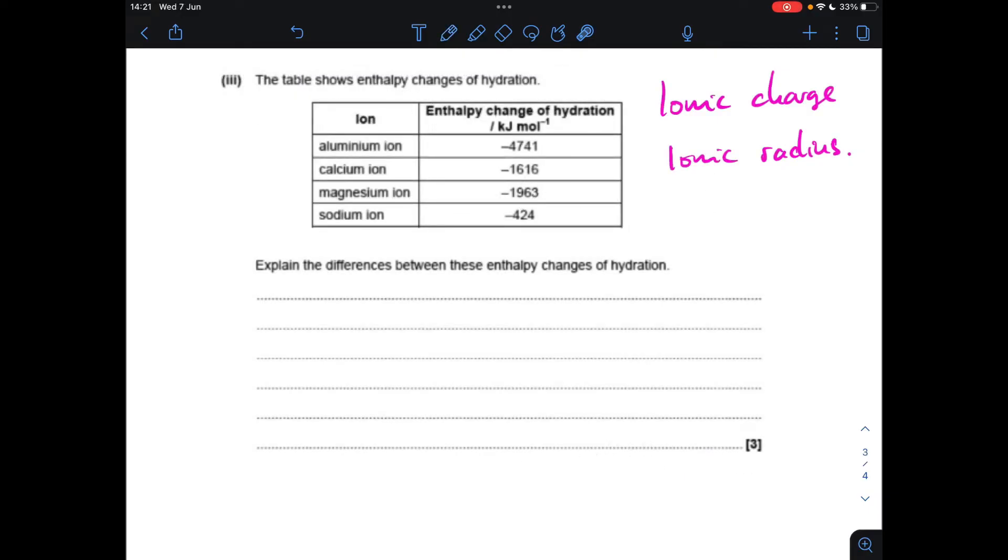Moving on to the next part, we've got to explain the difference between the enthalpy changes of hydration for these metal ions. You'll notice I've written up ionic charge, ionic radius - so these are the factors that affect enthalpy change of hydration. So the first one we'll deal with is ionic charge. So you can see there's a definite correlation between the ionic charge and the amount of energy released in the enthalpy changes of hydration.